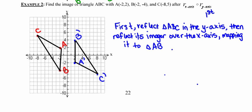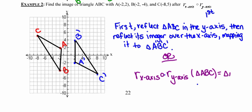And again, that would be a really nice way of describing in words or in sentences. If you prefer, you can use the function notation. A reflection in the x-axis following a reflection in the y-axis of triangle ABC results in triangle A prime, B prime, C prime.